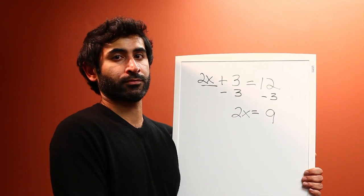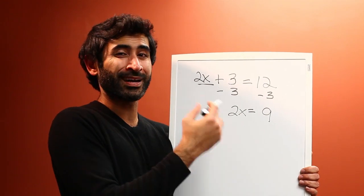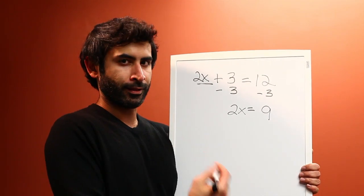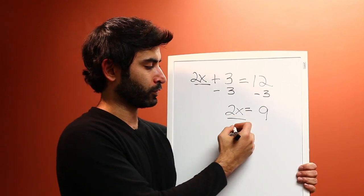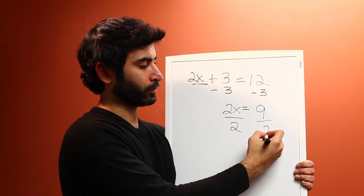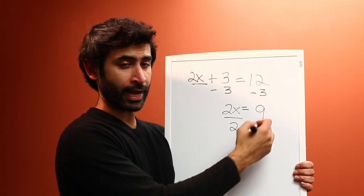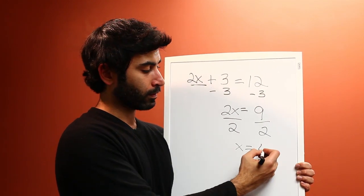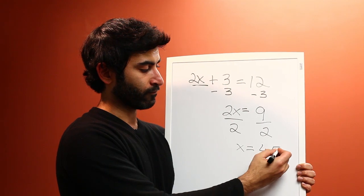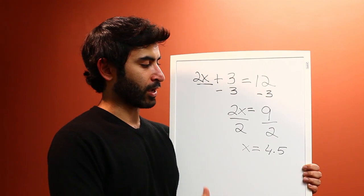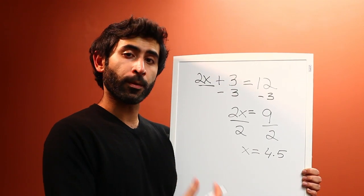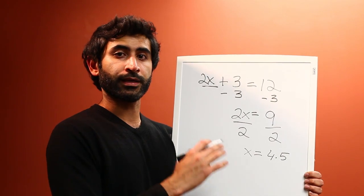We still want to find X. So it's basically saying 2 multiplied by something is equal to 9. Let's find what that is. So let's divide by 2, divide by 2, and we get X is equal to 9 divided by 2, or 4.5. And that is how you solve a more complicated algebraic equation.